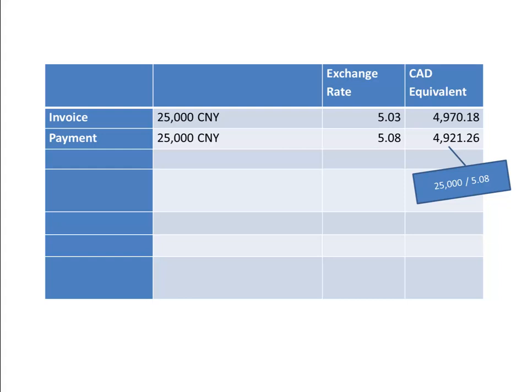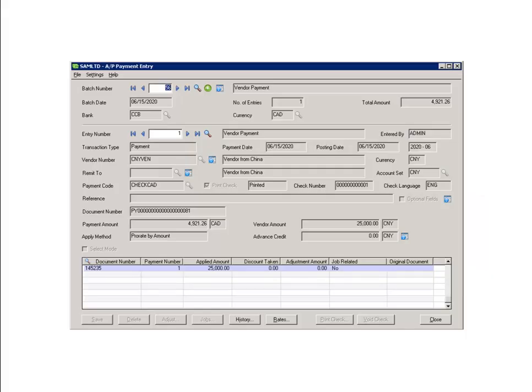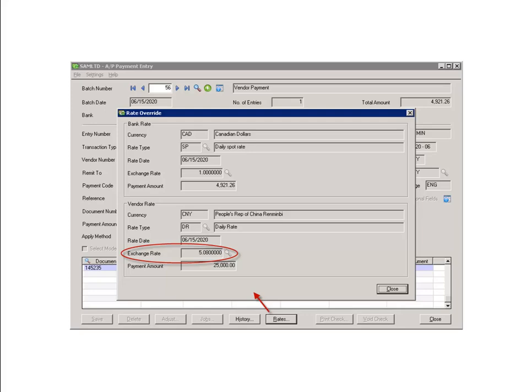And therefore, we have earned that difference as a result of changes in foreign exchange. Our entry will be Debit Accounts Payable for 4,970.18, which is our original invoice value; a credit to Cash or Cash in Bank for 4,921.26; and Credit Realized Foreign Exchange Gain for the difference of 48.92. The payment entry in SAGE is recorded by selecting the appropriate invoice, the corresponding exchange rate is retrieved for the transaction, and the journal entry is generated as follows.